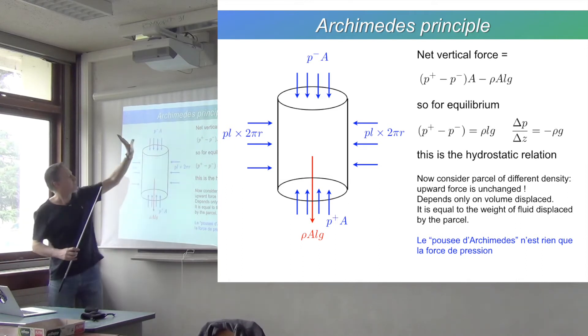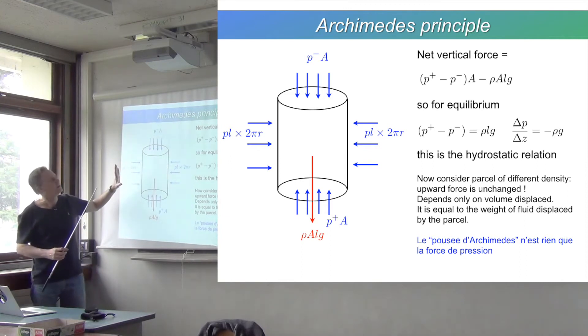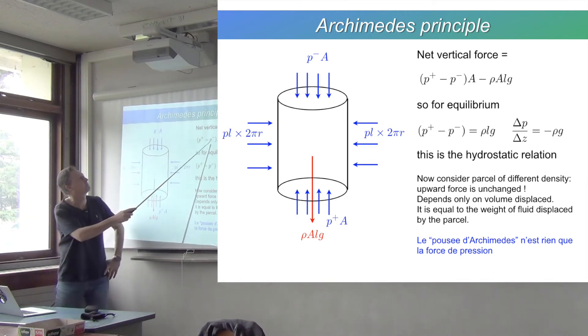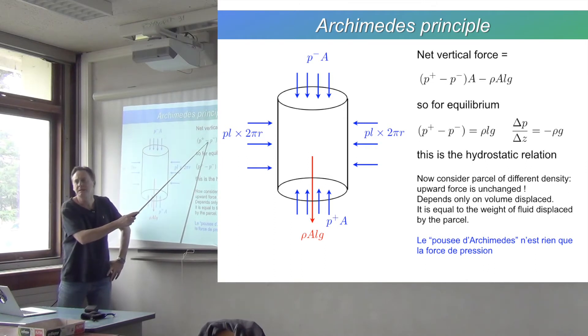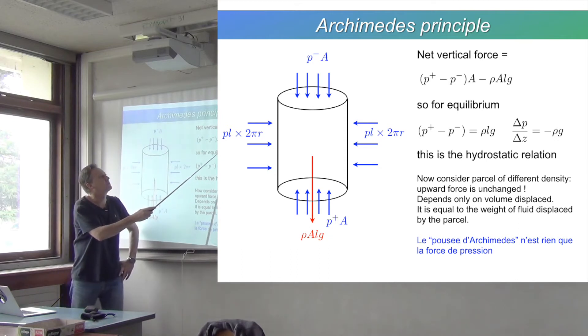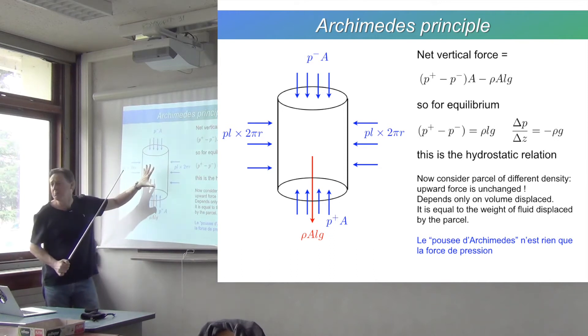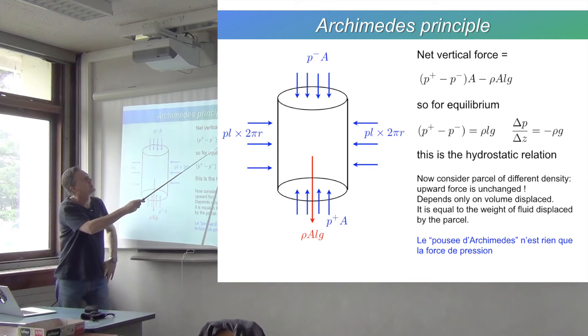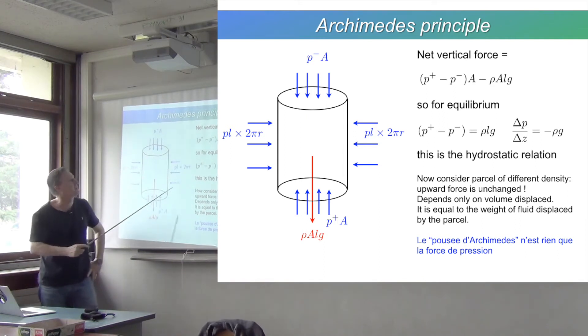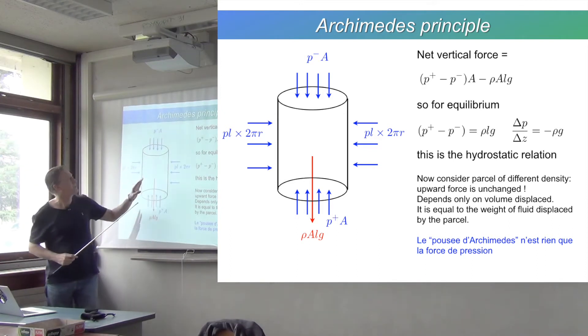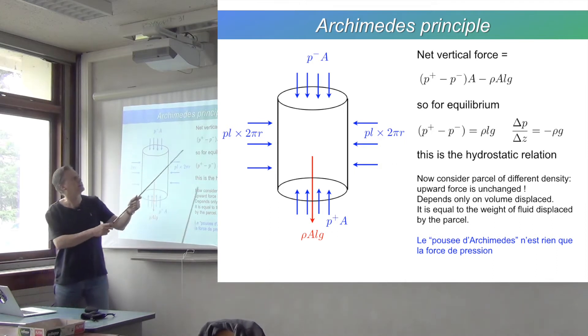The imbalance in force is in the vertical. You have slightly more up push than down push from the pressure field, so the net force will be upwards: P plus times A minus P minus times A. That is balanced by the net downward force, which is the weight of whatever's in that volume: density times this area times this length times gravity.